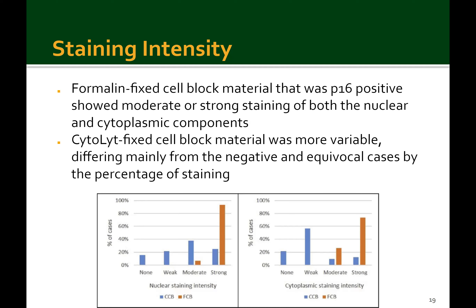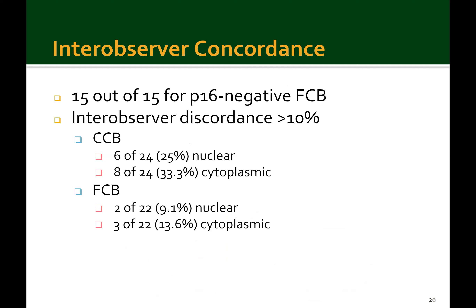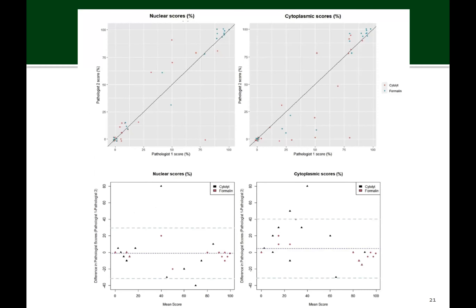Regarding inter-observer concordance, it was perfect for all the P16 negative cases that were formalin fixed. Inter-observer discordance of greater than 10% was noted more frequently in the cytolite-fixed cell blocks — about 25% for nuclear staining compared to 9.1% for formalin, and 33.3% cytoplasmic compared to 13.6% for formalin. The scatter plots show improved inter-observer agreement for the formalin cell block group, with cytolite cases showing a larger vertical distance from the diagonal line compared to formalin cases, which cluster closer to the diagonal.